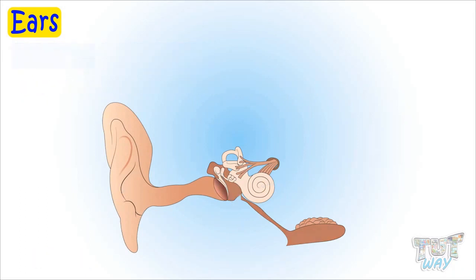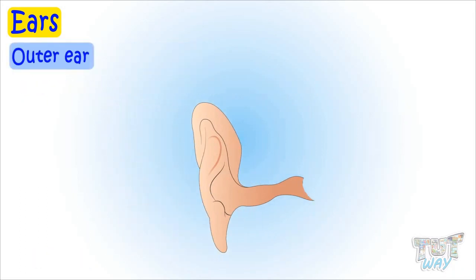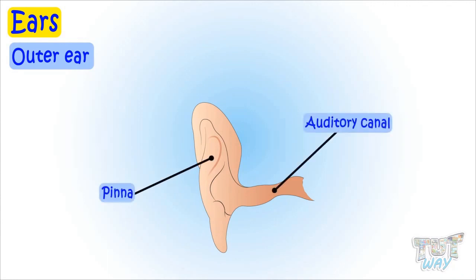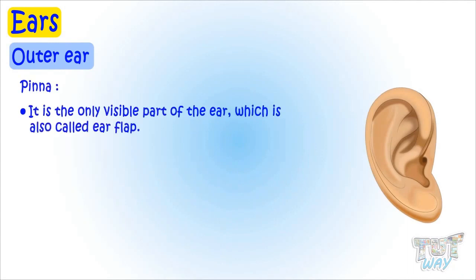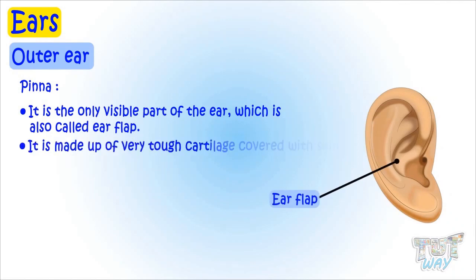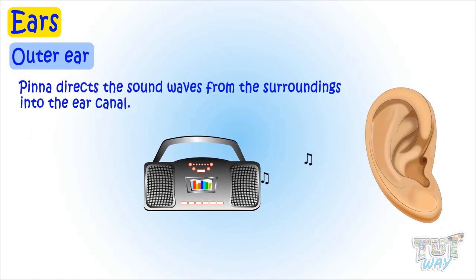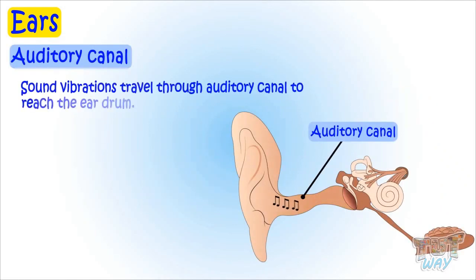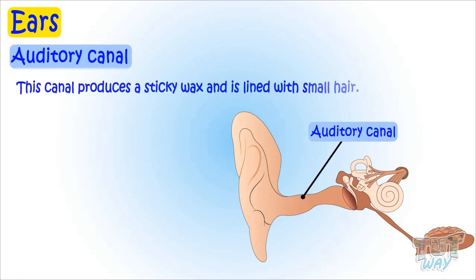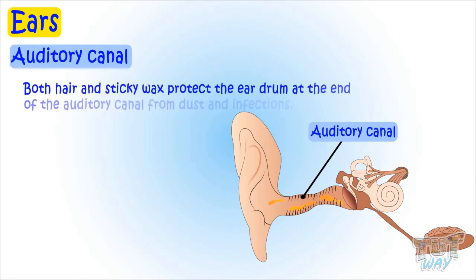Let's first learn about the outer ear. The outer ear consists of the pinna and the auditory canal. The pinna is the only visible part of the ear, also called the ear flap. It is made up of tough cartilage covered with skin, and its main function is directing sound waves from the surroundings into the ear canal. Sound vibrations then travel through the auditory canal to reach the eardrum. This canal produces sticky wax and is lined with small hairs, both of which protect the eardrum from dust and infections.